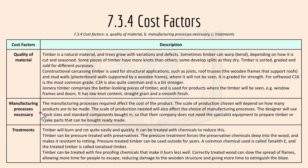For manufacturing processes, they affect the cost of a product because manufacturing is an added value. The scale of production chosen depends on how many products are to be made, and it will also affect the choice of manufacturing processes. Designers will use stock sizes and standard components bought in so that the company does not need specialist equipment to prepare timber or make parts that can be bought ready-made.